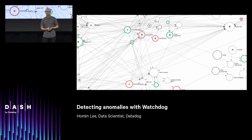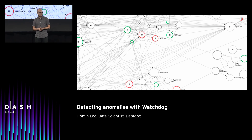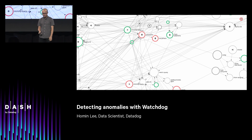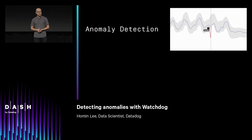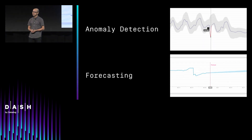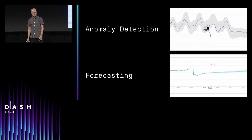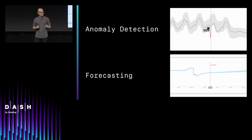Ashley showed us how we can visualize the increasing complexity of our systems, but how can we effectively monitor our services as they multiply and their dependencies constantly change? Datadog provides machine learning algorithms like anomaly detection and forecasts to look out for all the usual ways your systems can fail. These are great, but you yourself have to decide when to use them.